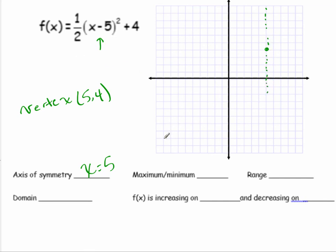This is going to be an upward facing parabola. The maximum or minimum, we're going to have a minimum value of 4 at x equals 4. The range is going to be y ≥ 4. The domain is all reals.